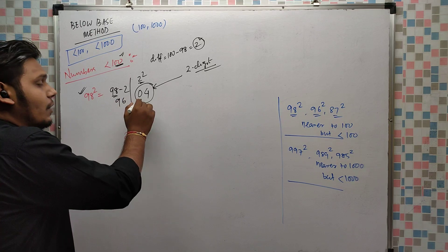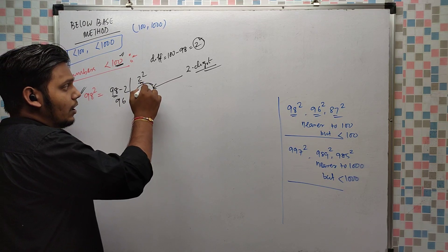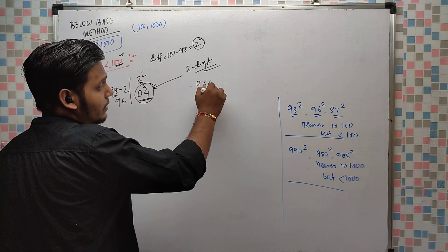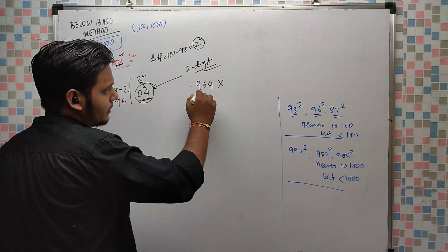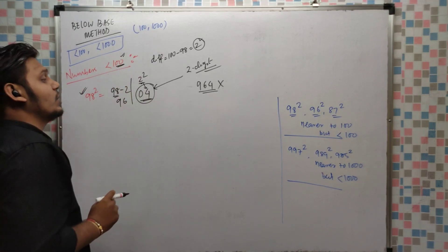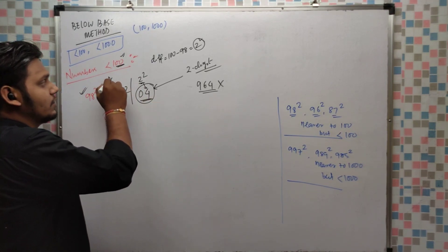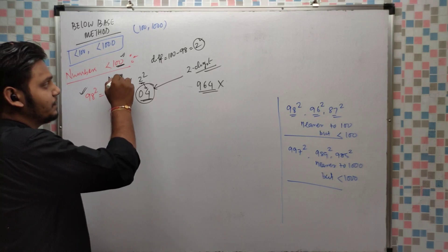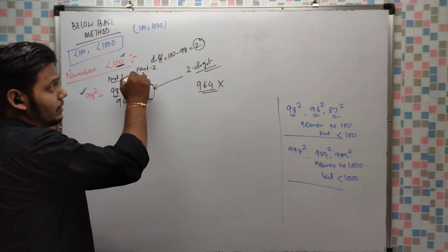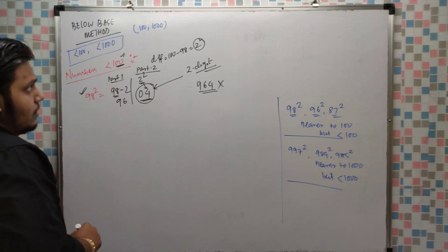You have to keep two digits here while balancing. So now part 1 is 96 and part 2 is 04. The square of 2 is 4, but if we write 964 then it is the wrong answer, because our base is having two zeroes. So in the second part you have to keep two digits when the base is 100.